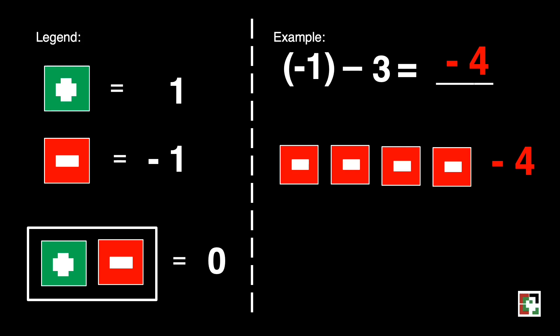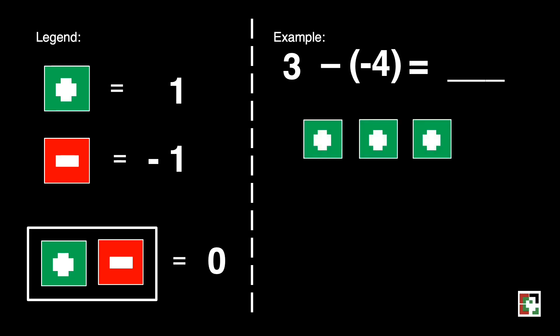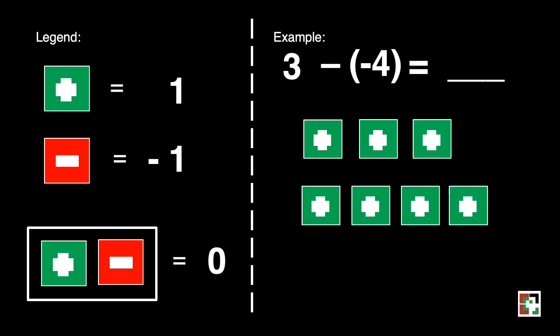Let's have another one. What if we have 3 minus negative 4? 3 here is a positive 3, so it is represented by 3 green squares. Our subtrahend is negative 4, and it also signifies how many zero pairs we'll have — so that's 1, 2, 3, and 4. Since our subtrahend is a negative 4, we'll remove 4 red squares. The result is positive 7 or 7 green squares.